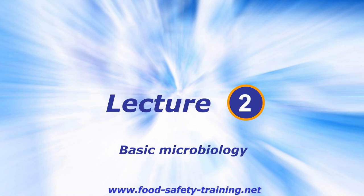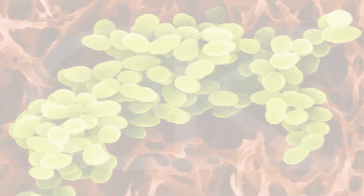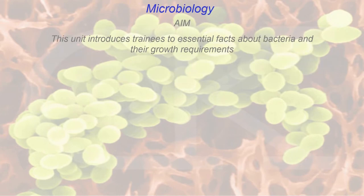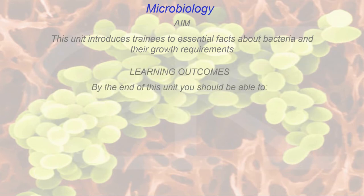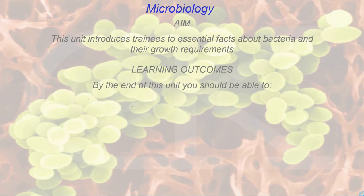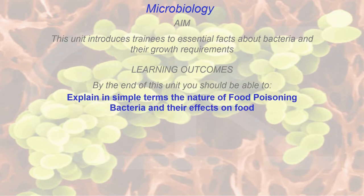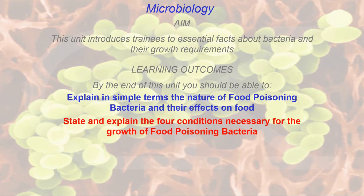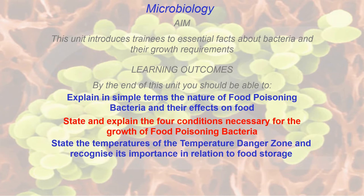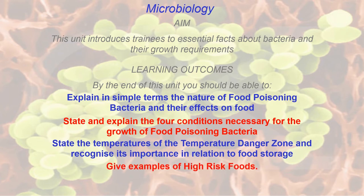Welcome to lecture two on basic microbiology. The aim of this unit is to introduce you to essential facts about bacteria and their growth requirements. By the end of this unit you will be able to explain the nature of food poisoning bacteria and their effects on food, state the four conditions necessary for bacterial growth, and state the temperatures of the temperature danger zone.